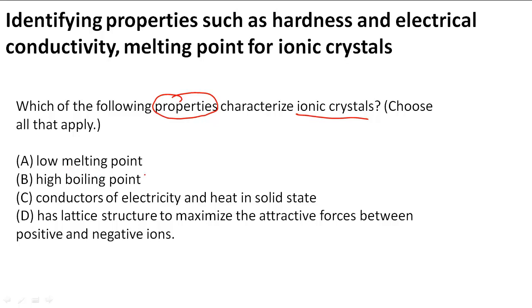So A, does it have a low melting point? B, high boiling point. C, conductors of electricity and heat in a solid state. D, has lattice structure to maximize attractive forces between positive and negative ions.